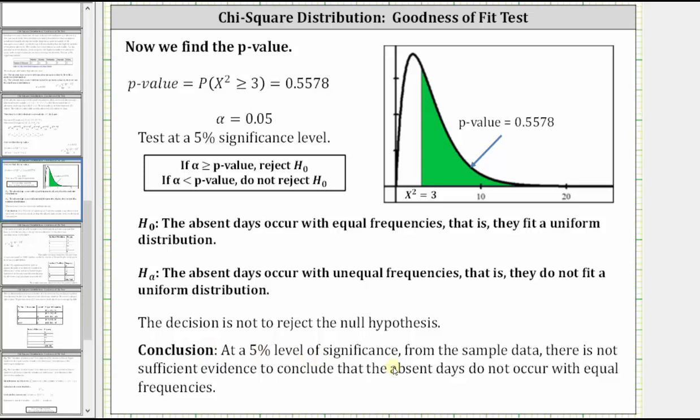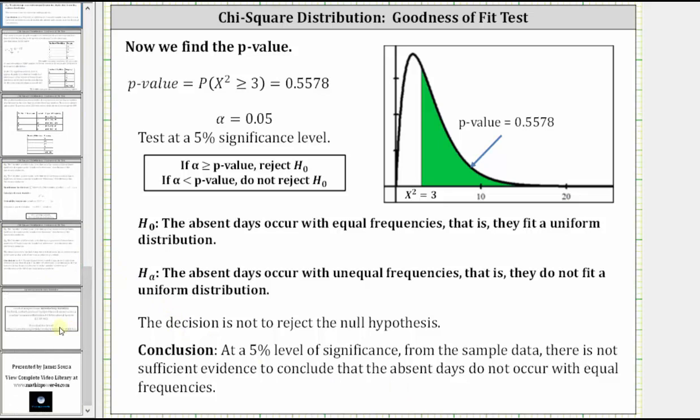at a 5% level of significance from the sample data, there is not sufficient evidence to conclude that the absent days do not occur with equal frequencies. I hope you found this helpful. Thank you.